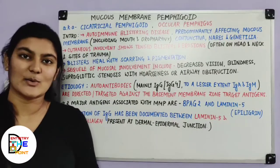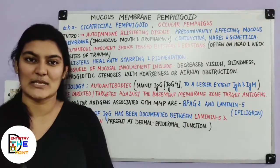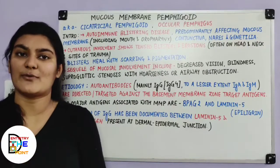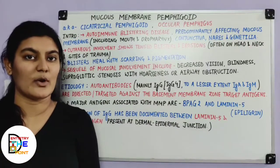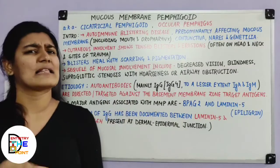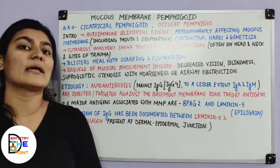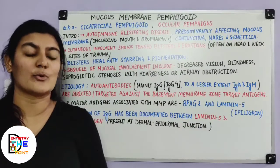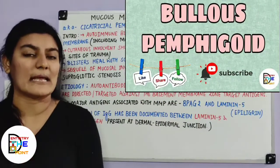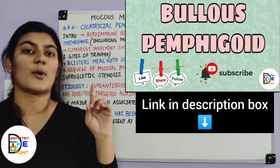Hi everyone, welcome back to our channel Dentistry to the Point. I am dentist Saloni Jin and in this video we are going to continue with pemphigoid — specifically the second type, namely the mucous membrane pemphigoid. This is the end of pemphigoid. As I have told you, there are three types, with the two main important ones being bullous pemphigoid — for which the video is already made, link in the description box — and mucous membrane pemphigoid.